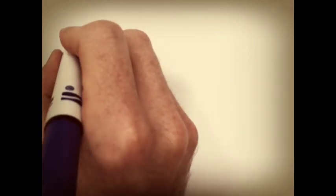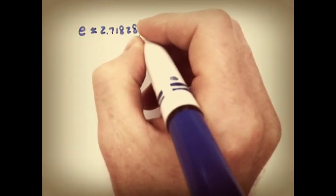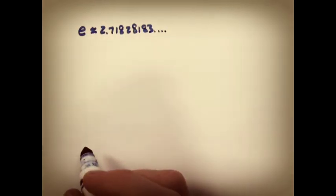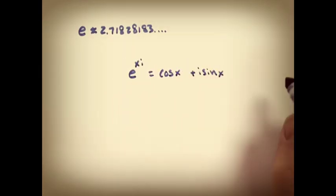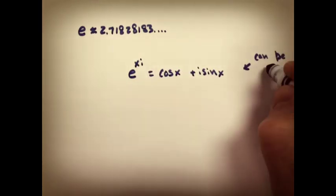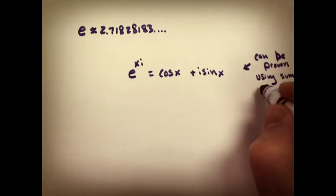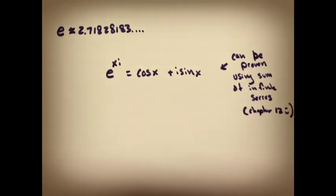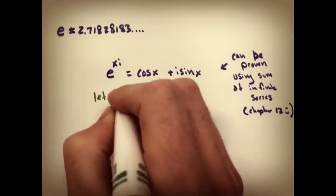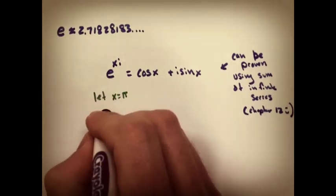Now, there's an interesting side note here. If we took Euler's constant, e, 2.71828138, there it is. Euler came up with a famous identity, or his formula, which can be proven using sum of infinite series. I will show you this next chapter, but he showed that e to the xi equals cosine x plus i sine of x.